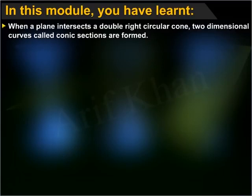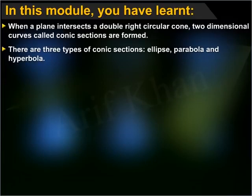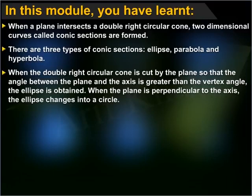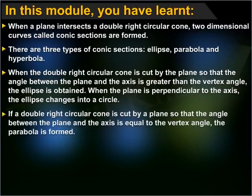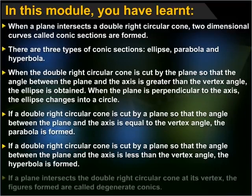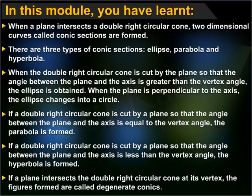When a plane intersects a double right circular cone, two-dimensional curves called conic sections are formed. There are three types of conic sections: ellipse, parabola, and hyperbola. When the angle between the plane and the axis is greater than the vertex angle, the ellipse is obtained; when the plane is perpendicular to the axis, the ellipse becomes a circle. When the angle equals the vertex angle, the parabola is formed. When the angle is less than the vertex angle, the hyperbola is formed. If a plane intersects the double right circular cone at its vertex, the figures formed are called degenerate conics.